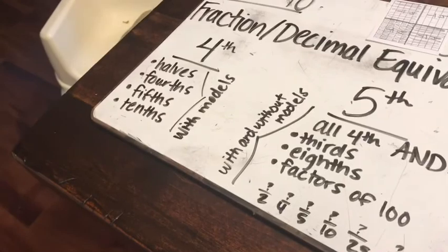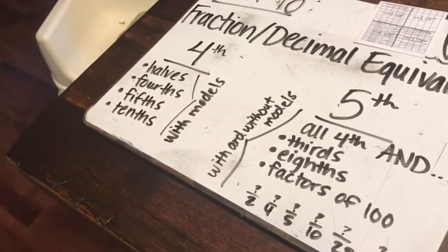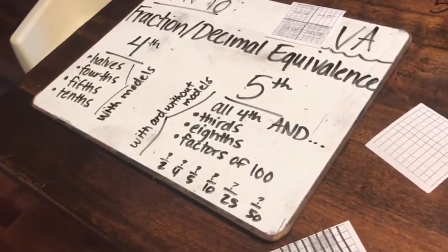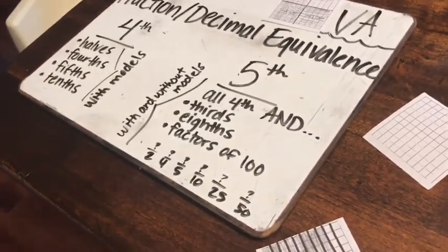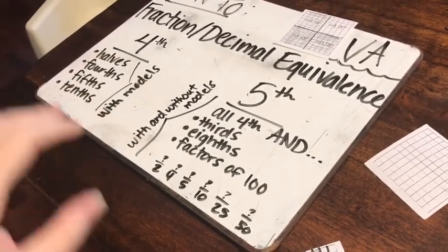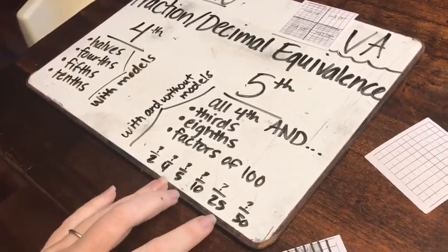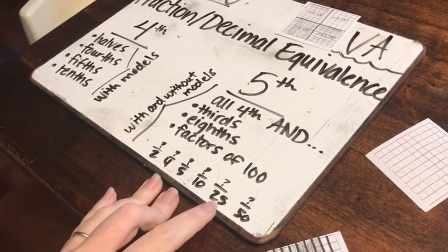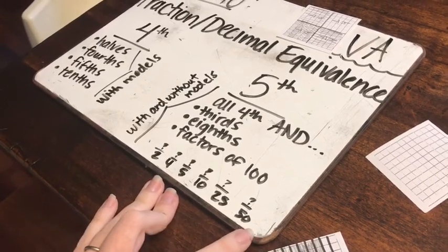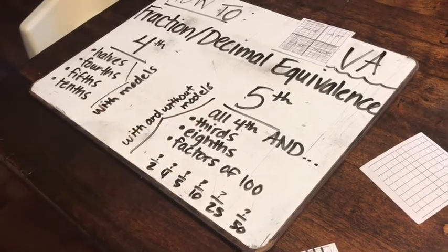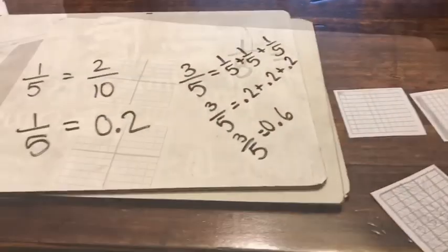We talked about halves, fourths, fifths, and tenths. Now I'm going to get into some of the fifth-grade ones that are a little trickier: thirds and eighths. Factors of a hundred — the only new ones are 25ths and 50ths — I'm probably not going to cover here. I'm going to do thirds and eighths to show you how you can model those for fifth grade.